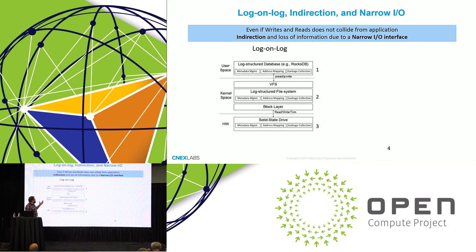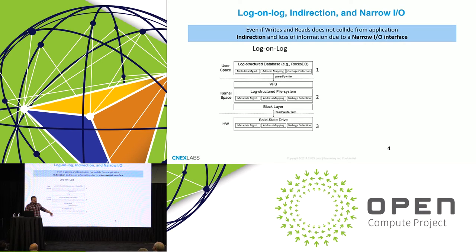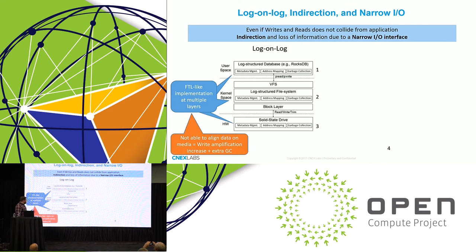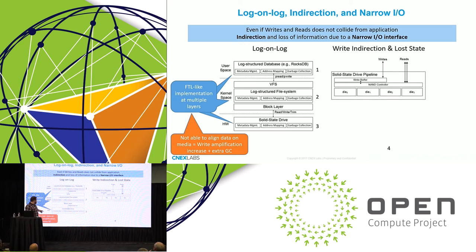What do I mean by log-on-log? When you build a host storage stack, in user space we have RocksDB, which is a log-structured database. Inside the Linux kernel we also have a log-structured file system. And within the drive itself, we have an FTL which is also log-structured. So we are doing three levels of indirection going down the stack. Whatever I write up here, I have no clue where it's going to end up in the media. This also means extra garbage collection — if you could align what you do at the top with the bottom, you could get reduced write amplification and remove garbage collection that you'd otherwise have to do.